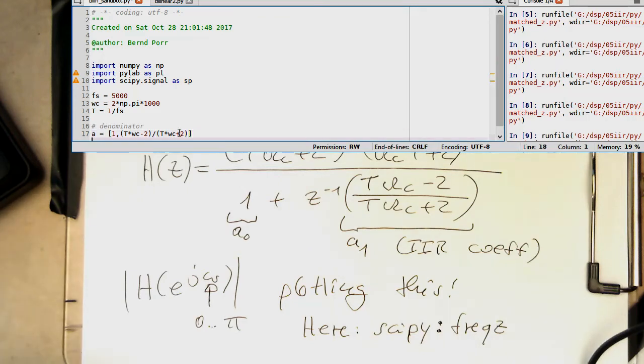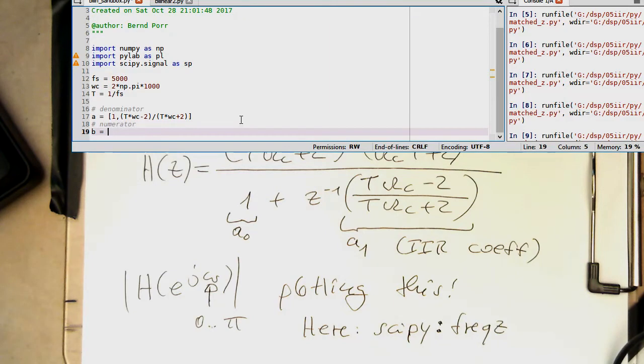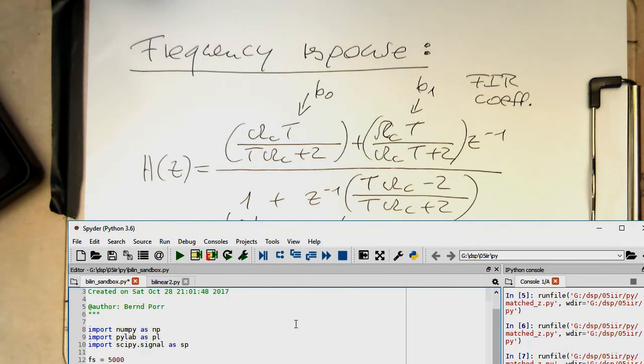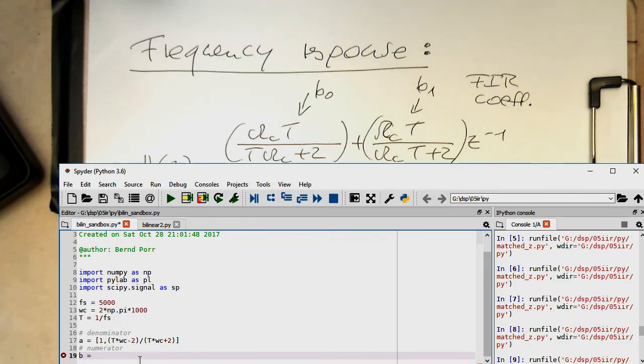And then we just need to create the same for the numerator. Numerator is just now a bit covered here. So let's move this a bit down. And so the numerator is here. Let's see if I manage to move this window into our capture area. So numerator is a bit more involved here. So we've got our omega c multiplied by T, and then this is divided by T multiplied by omega c plus 2. So that's the first coefficient here.